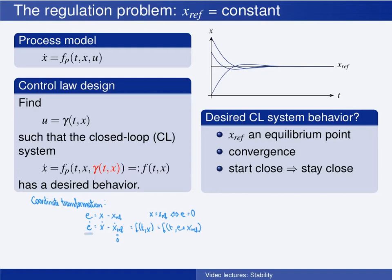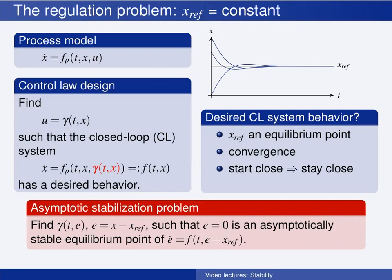So the system written in the new coordinates is: ė equals f of time t and e plus x_ref, where the constant x_ref just goes in as a parameter in the function. We saw that to solve the regulation problem, we want to find a control law that makes x_ref an asymptotically stable equilibrium point of the original system equations, which corresponds to making the origin an asymptotically stable equilibrium point of the system written in error coordinates. When learning about linear control systems, you have probably always been stabilizing the origin, because when you do the linearization using the Taylor series representation, you immediately work with error coordinates. So the regulation problem leads to an asymptotic stabilization problem.